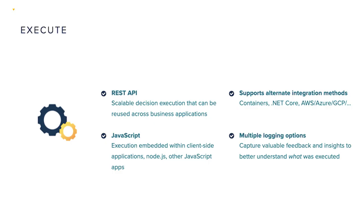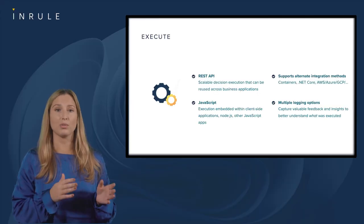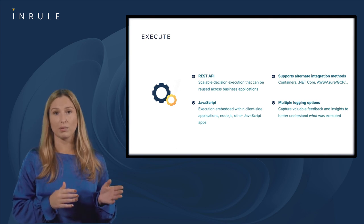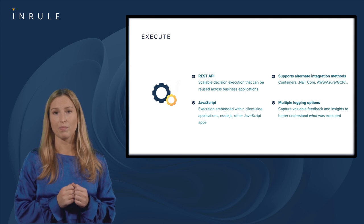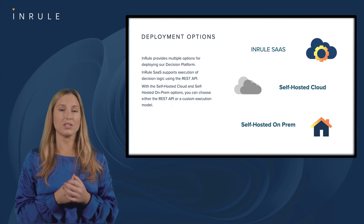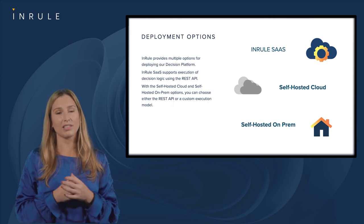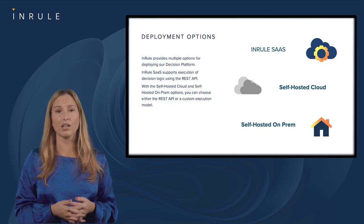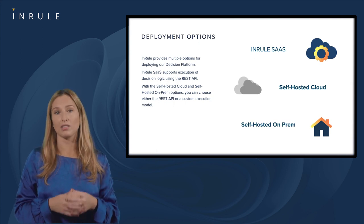Using the catalog, you can handle deployment and migration, promoting or rolling back changes across multiple environments. Using the REST API, scalable decision execution can be reused across your organization and business applications. You can also have execution embedded within client-side applications using JavaScript, and alternate integration methods are supported. We offer multiple logging options that capture valuable feedback and insights so you can better understand what was executed. Enrol provides different deployment options: Enrol Software as a Service, self-hosted on the cloud, or self-hosted on-premises. Execution of decision logic is supported using the REST API in the SaaS environment, and with self-hosting options you can choose between the REST API or a custom execution model.